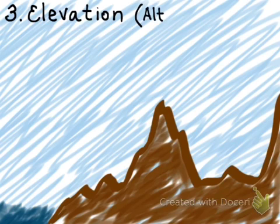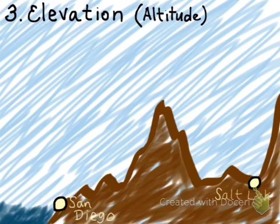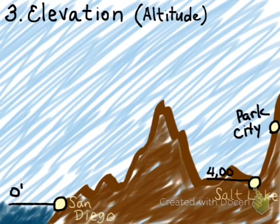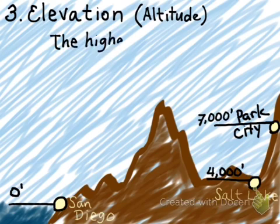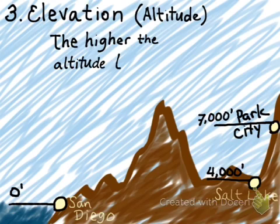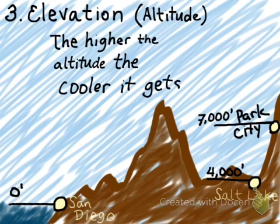The next factor that affects our climate in Utah is elevation, or how high we are above sea level. Basically, the higher you go in elevation, the cooler the temperatures get.